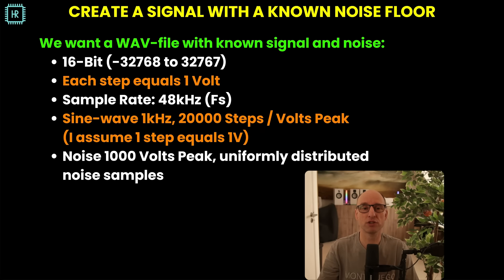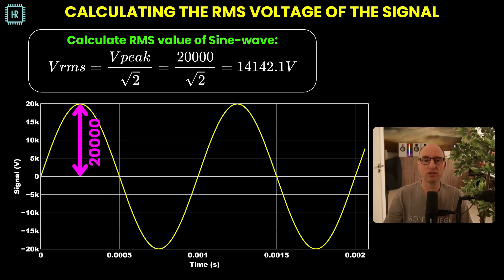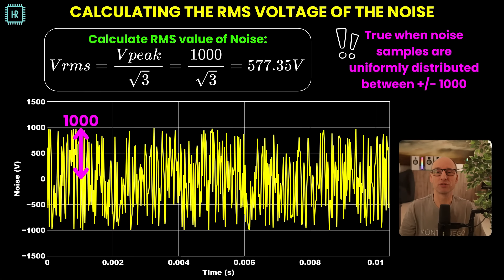16-bit signals have a range of plus 32,767 to minus 32,768 steps. Let's assume each step equals 1 volt. So let's create a large sine wave with an amplitude of 20,000 volts peak and a noise signal with a 1,000 volts peak level. You need to know the RMS voltage of the signal — dividing the amplitude by the square root of 2 gives 14,142 volts. For uniformly distributed noise with a known peak value, the RMS level is the peak level divided by the square root of 3, which is 577.35 volts.